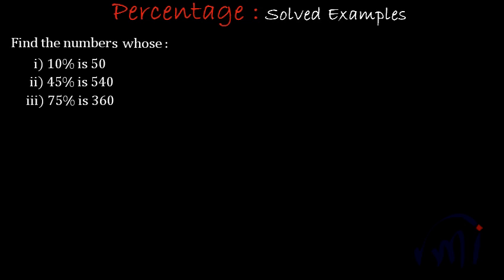In the first problem I have to find a number whose 10% is 50. So we are going to assume that the number is x. Let the number be x, and if x is the number, the first problem gets converted into 10% of x is equal to 50.